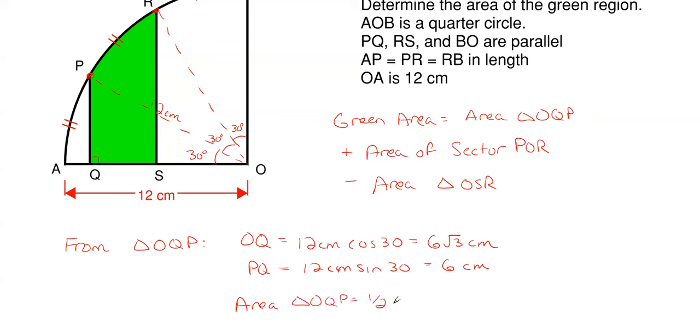So my overall area for triangle OQP will just be one half times my base of 6 square roots of 3 times my height of 6 centimeters and that gives me 18 square roots of 3 centimeters squared. So that's our first area done.